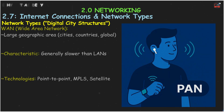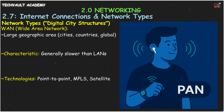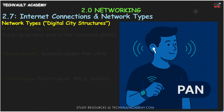A PAN, Personal Area Network, is for your very close personal devices. Think Bluetooth connecting your phone to your wireless headset, your car's audio system, or health and fitness trackers. NFC and Infrared are also PAN technologies.